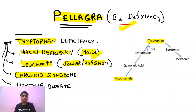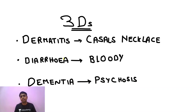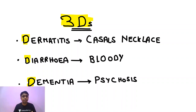In carcinoid syndrome, tryptophan is used up in the production of excess serotonin (hydroxytryptophan), causing a deficiency of nicotinamide. In Hartnup disease there is also vitamin B3 deficiency. Clinically, remember the mnemonic of three D's: dermatitis, diarrhea, and dementia. A fourth D — death — is the final outcome if the patient is not diagnosed and treated early.